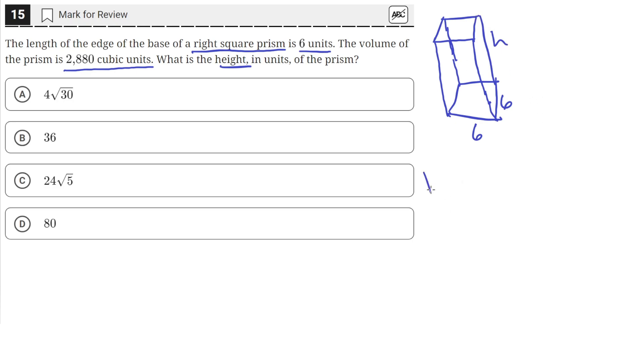So the volume of any prism is equal to base times width times length times height. And we're given the width and the length since the square down here has lengths of 6 and 6.